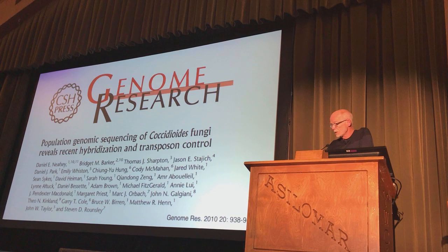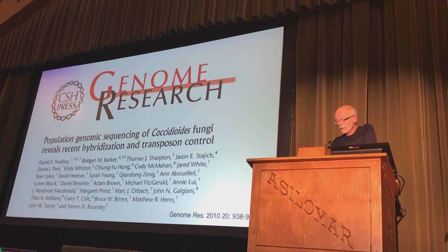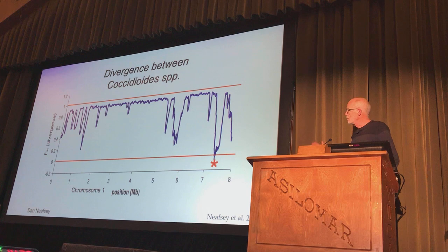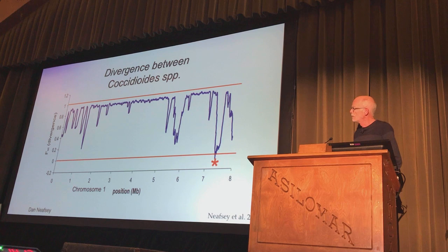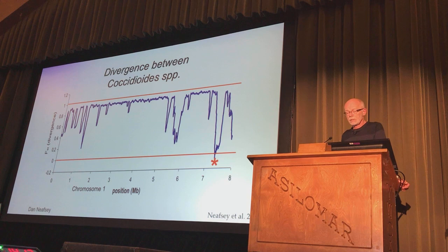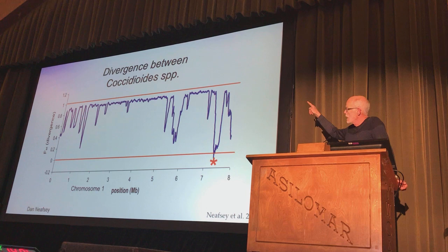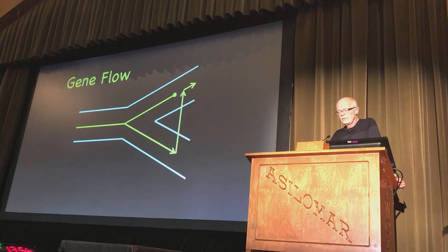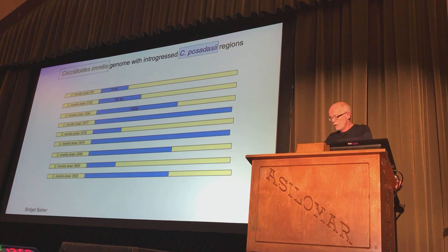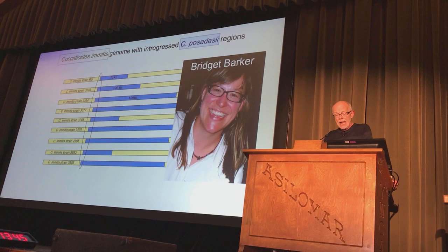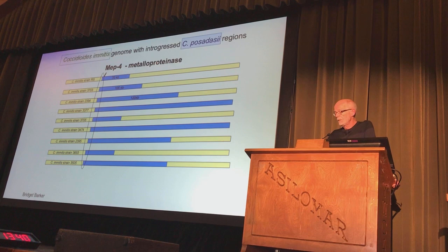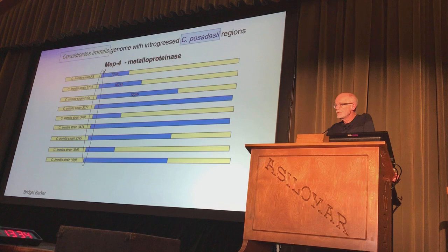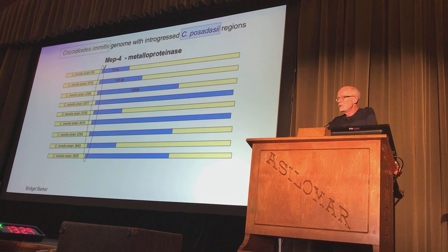Those genomes also aided population genomics. Dan Neafsey and Bridget Barker from Arizona led this paper — the idea was to put several genomes together, some from Arizona and some from California, and scan across the genome using a statistic that talks about divergence. They're well diverged so the trace should be at the top where FST is almost one. But there's a spot with an asterisk where it's down to nothing — meaning both species have the same allele, so there had to be gene flow by hybridization and introgression. Bridget noticed that at that sharp edge there's a gene coding for one of these metalloproteinases, in a group previously shown to be a virulence factor.